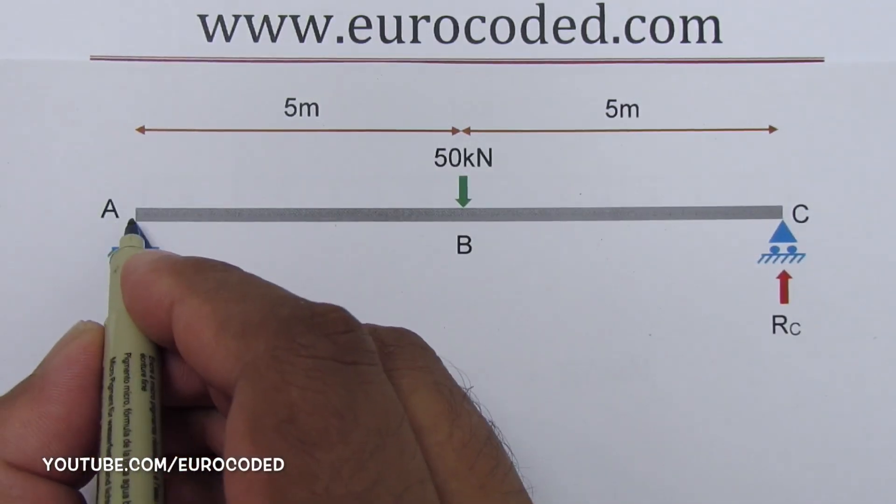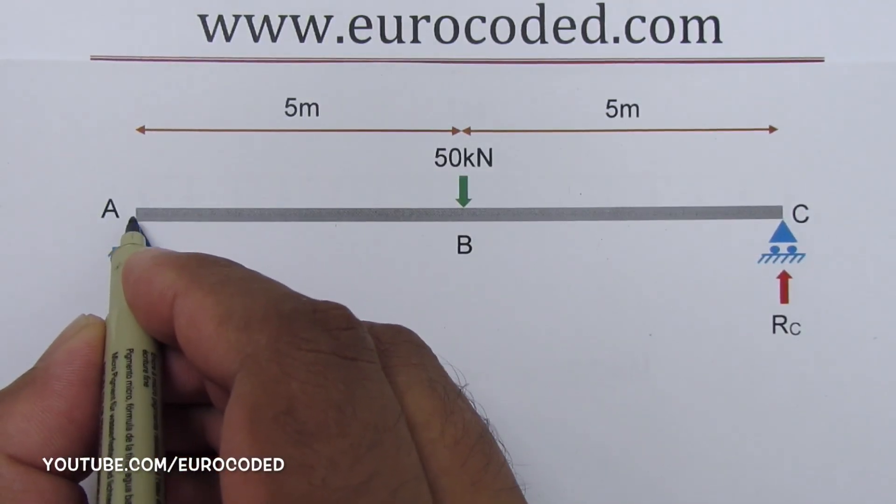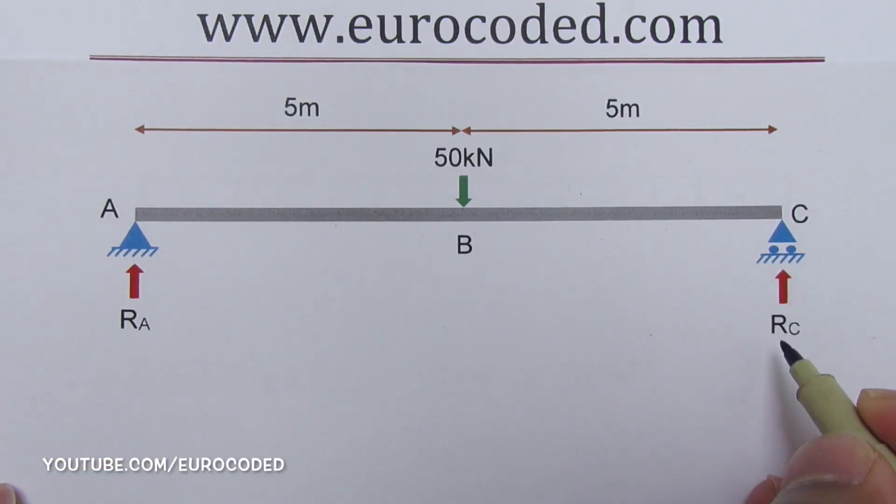Now let's take moments about point A. You can see that the lever arm is 0 for RA when we are taking moments about point A. Hence RA has 0 moments about point A. Then we have an anticlockwise moment due to RC and the lever arm is 10 meters.